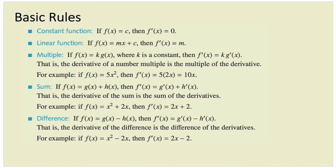So here are some basic rules that we often use. If a function is a constant — let's say f of x is equal to 3, where c means it's a constant — then the derivative is going to be 0. Whenever you have a constant, the derivative will always be 0. And if the function is a linear function, let's say f of x is equal to 5x plus 8, then its derivative f dash of x is going to be 5 only. The derivative of 5x is simply 5, and the constant term 8 becomes 0, so the derivative is simply 5.